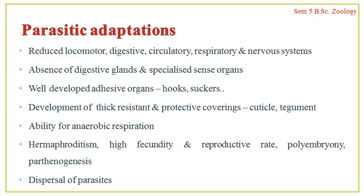Regarding dispersal, parasites get dispersed from one host to another by producing various stages such as cysts and larvae. Larvae may be mobile, and in the cyst stage the organism can survive in a harsh external environment for a long period until it finds a favorable host. For example, the miracidium larva facilitates easy dispersal of the parasite. These kinds of parasitic adaptations can be found in various organisms and help in sustaining a parasitic mode of life.